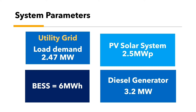The system parameters are: utility grid, load demand of 2.47 megawatt, PV solar system of 2.5 megawatt peak, battery energy storage system of 6 megawatt hours, and diesel generator of 3.2 megawatt.